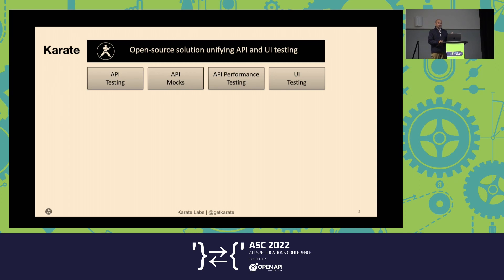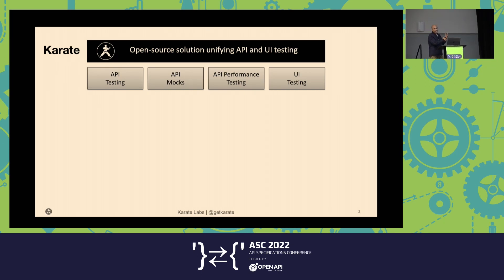Karate is an open source project that unifies API and UI automation. It has a very interesting mix of capabilities: API testing, API mocking, and API performance testing. That's actually quite cool — you can take your functional test flows and automatically turn them into performance tests. And we do UI testing, but today we're going to focus on API testing, of course.